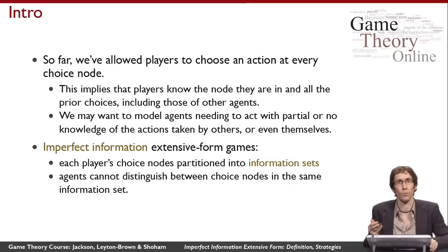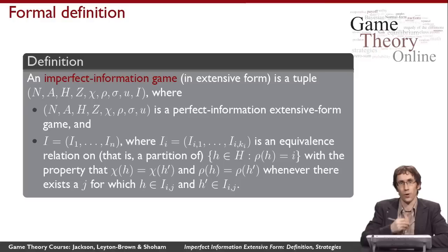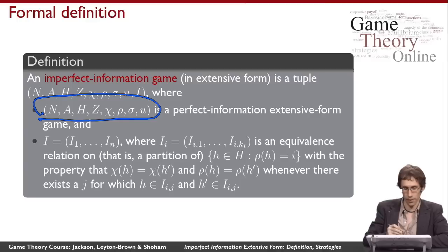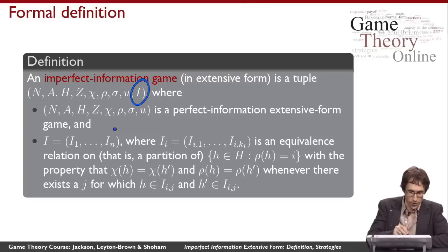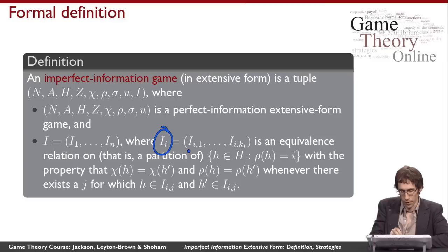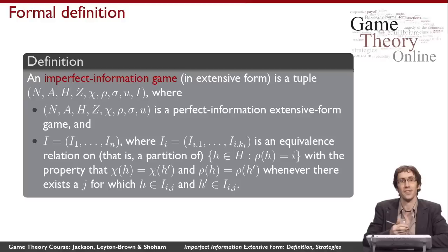To formally define an imperfect information extensive form game, we start with a perfect information extensive form game and add the ingredient of equivalence classes. We add an element for each player i, which is a set of equivalence classes numbered from one to k sub i. Each equivalence class contains one or more choice nodes that the player isn't able to tell apart. If every equivalence class contains only one choice node, we're back to the perfect information case; if any contains more than one, we have a game where the player doesn't know everything.